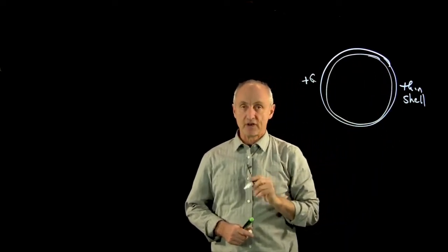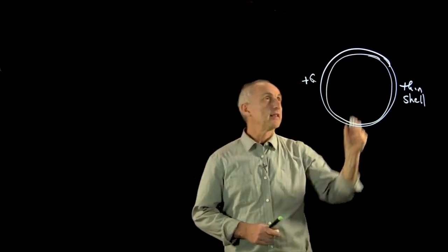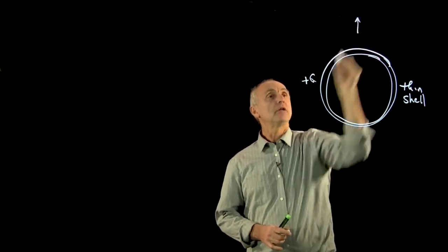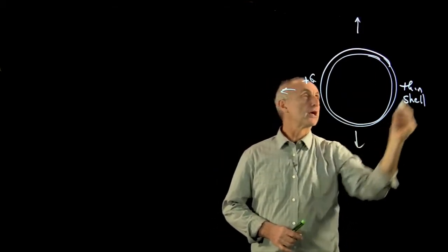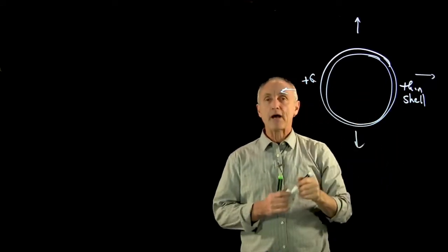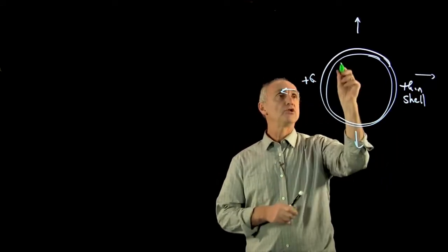And I want to show a very interesting result, that we know outside the shell this should just look like a point charge. But what about inside the shell in region one?